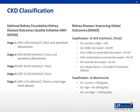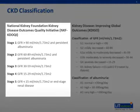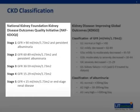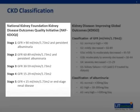CKD is classified by stages. The primary classification system has been outlined by the National Kidney Foundation's Kidney Disease Outcomes Quality Initiative, or KDOQI. Stage 1 CKD denotes an estimated GFR of greater than 90 with persistent albuminuria. Stage 2 includes GFR of 60 to 89 with persistent albuminuria. Stages 3 and 4 include GFR ranges of 30 to 59 and 15 to 29, respectively. A GFR of less than 15 represents stage 5 CKD, at which point renal replacement therapy may be under consideration.